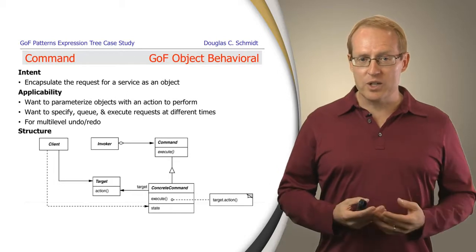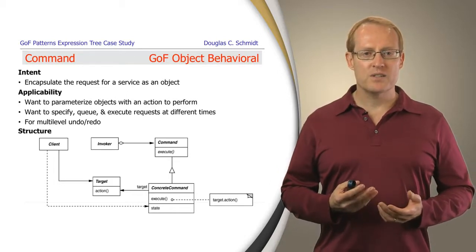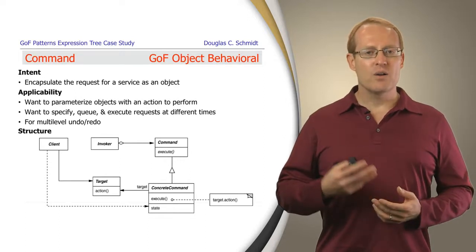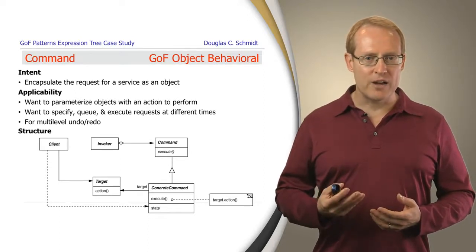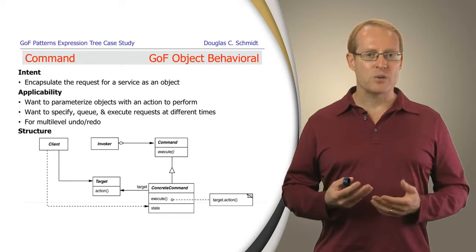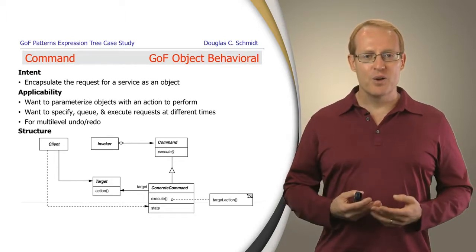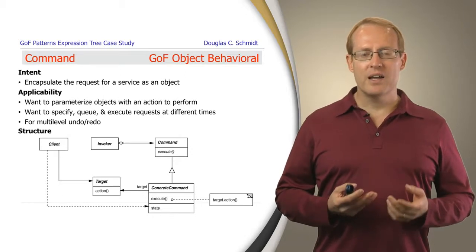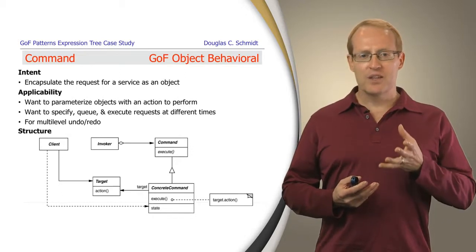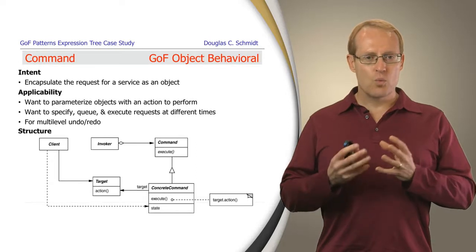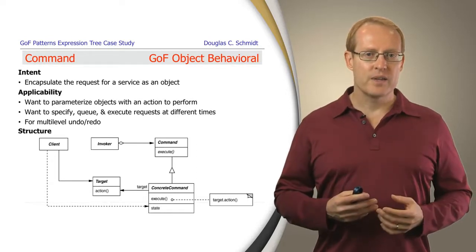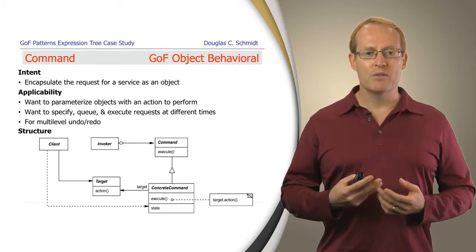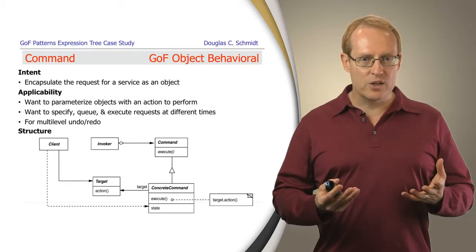The way in which we arrange these particular pieces of code corresponds nicely to a Gang of Four pattern called command. There's also another pattern from the POSA1 book called the command processor pattern that has a lot in common with it. The intent of the command pattern is to encapsulate the request for a service within the confines of a single object. You typically use this pattern if you want to parameterize objects in your program with actions they should perform under various conditions.